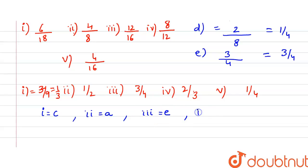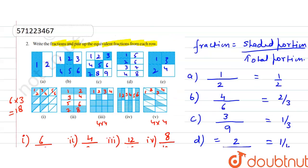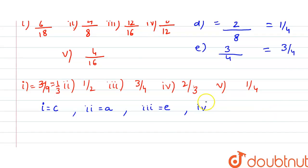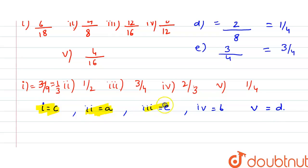The fourth figure gives 8/12 which simplifies to 2/3, so the fourth figure is equivalent to B. And the fifth figure gives 4/16 which simplifies to 1/4, so the fifth is equivalent to D. These are our equivalent fraction pairs.